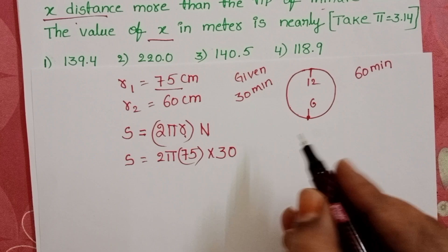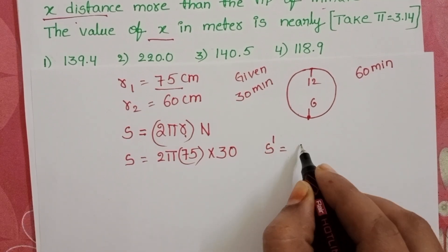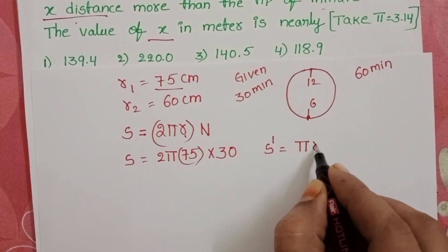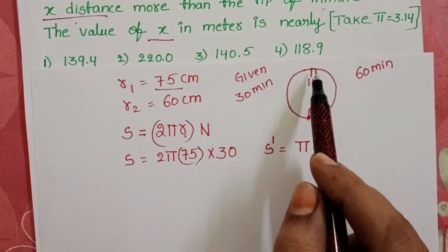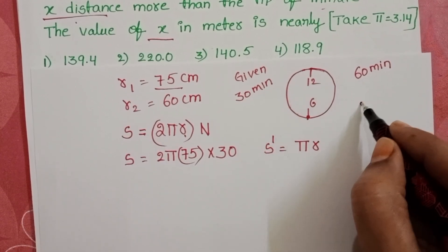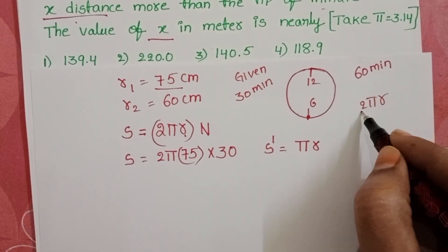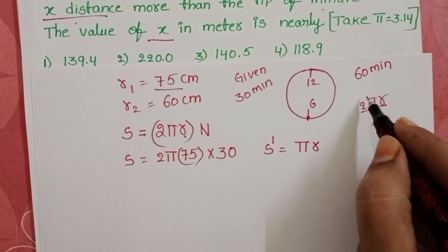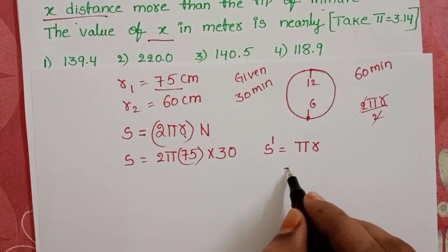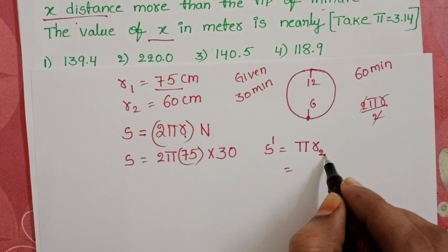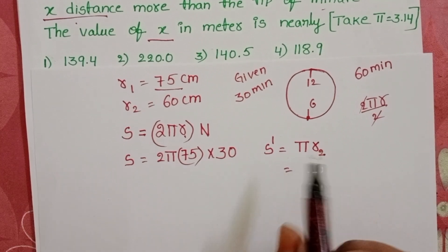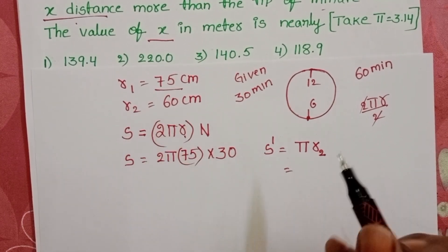Distance travelled by the minute hand, let it be S dash. This is only πR, half of the revolution. Circumference of the circle equals 2πR. Half means 2πR by 2, that equals πR. S dash equals πR. Here R is the length of the minute hand. Length of the minute hand is 60 centimeters.